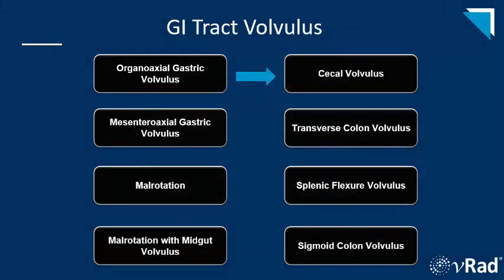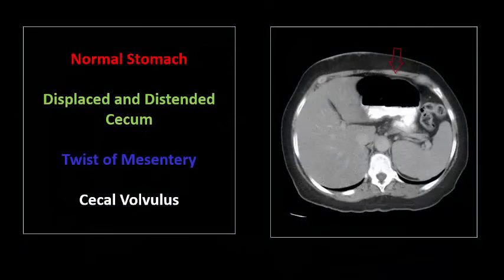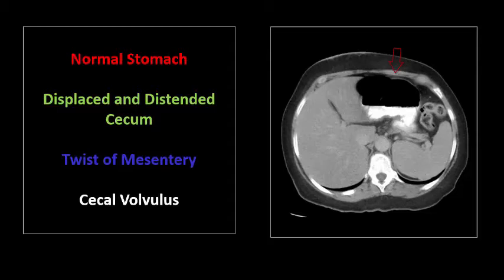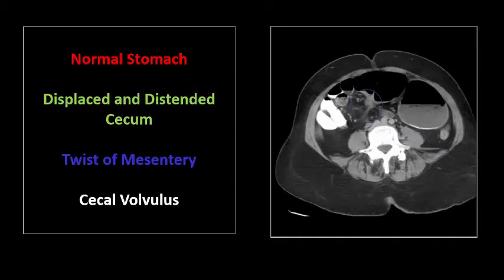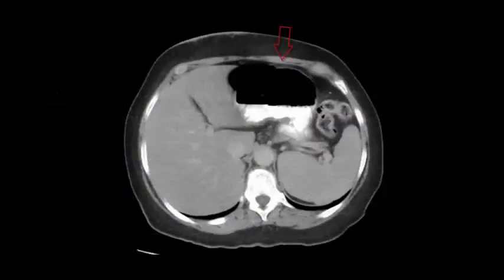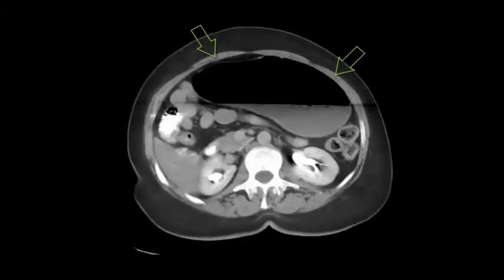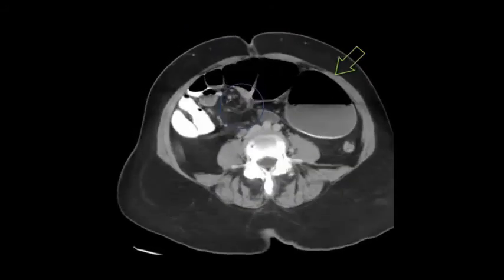Moving on to the large bowel. I point out the normal stomach, opacified with orally ingested contrast, to highlight how one might confuse the dilated and abnormally positioned cecum for a physiologically distended and normally positioned stomach. Adjacent to the stomach, we see the cecum displaced into the left upper quadrant, dilated with an air-fluid level. A little bit further down we see the characteristic twist in the right lower quadrant to confirm a cecal volvulus. Cecal volvulus accounts for 25 to 40 percent of colonic volvulus and there is usually a congenitally mobile cecum. Other predisposing factors include things that dilate the right colon, like pregnancy or recent colonoscopy.